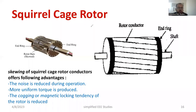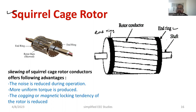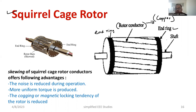Now let's discuss the squirrel cage type rotor in detail. There are two end rings — end ring one and another end ring. Between them, the rotor conductors are connected. They are made of copper or aluminum, though copper is the better and more convenient choice. The bars are arranged in a skewed fashion and connected to the shaft.